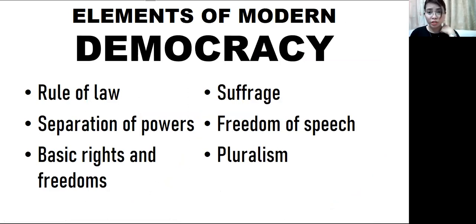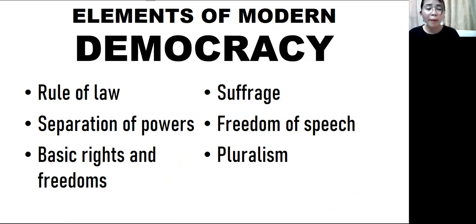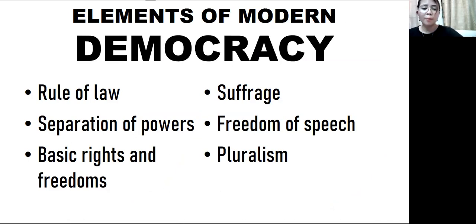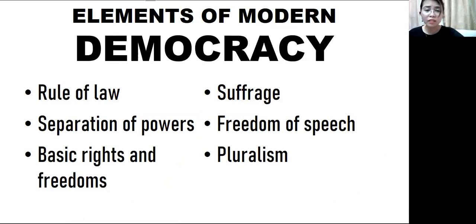There are elements of modern democracy. The modern democracy today, as practiced in many countries all over the world, is comprised of six fundamental elements: the rule of law, the separation of powers, basic rights and freedom, suffrage, freedom of speech, and pluralism. Let's talk about the first one — the rule of law.